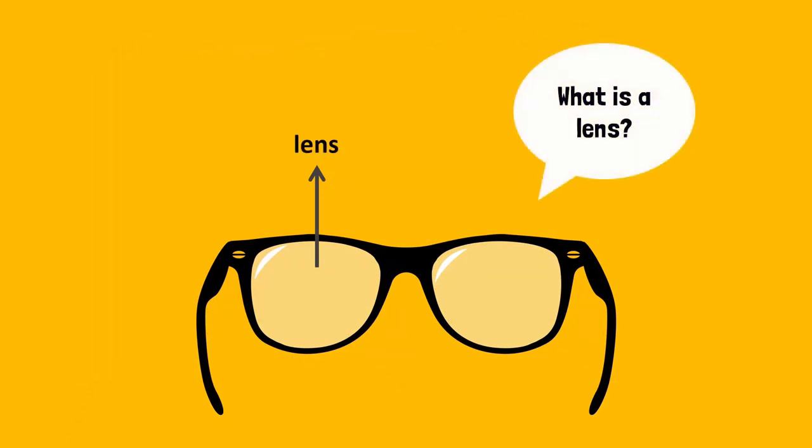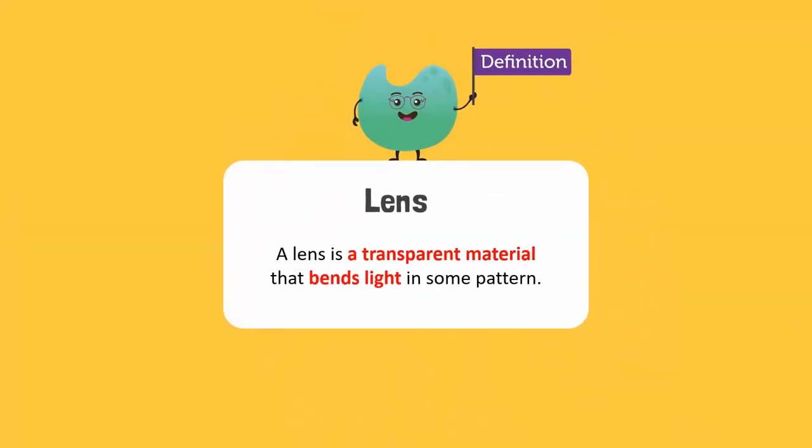So, what is a lens? In simple words, we can say that a lens is a transparent material that bends light in some pattern.